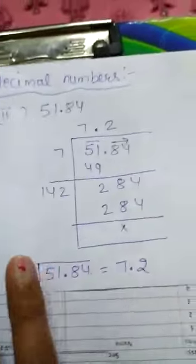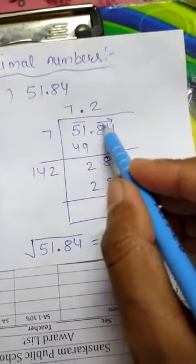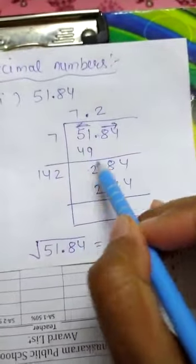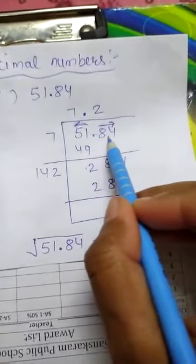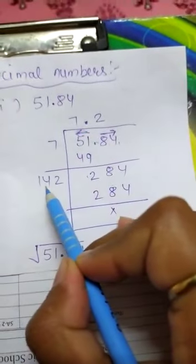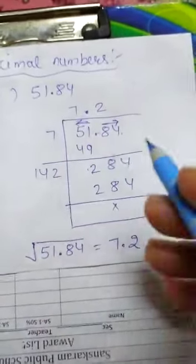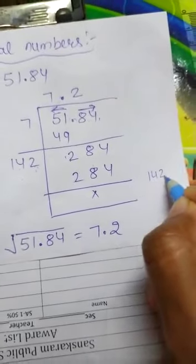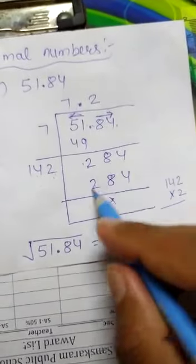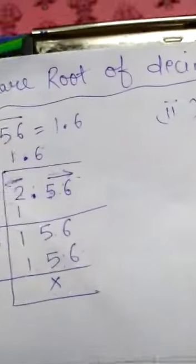Next example: find the square root of 51.84. From the decimal we make pairs: 51 and 84. 7×7=49, remainder is 2. Since 84 is after the decimal, we place a decimal in the answer here. 7+7=14, bring down 84 to get 284. 142×2=284. The answer is 7.2.